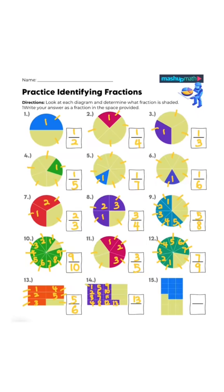One two three four five six seven eight nine ten eleven twelve thirteen fourteen fifteen — fifteen sixteenths. Seventeen, eighteen, nineteen, twenty.